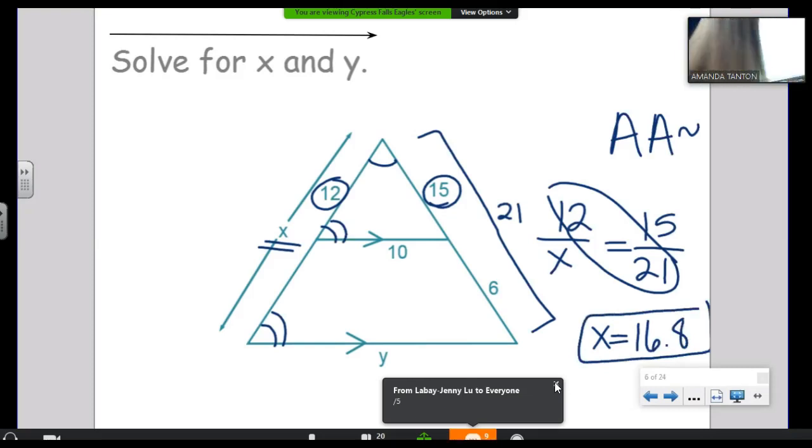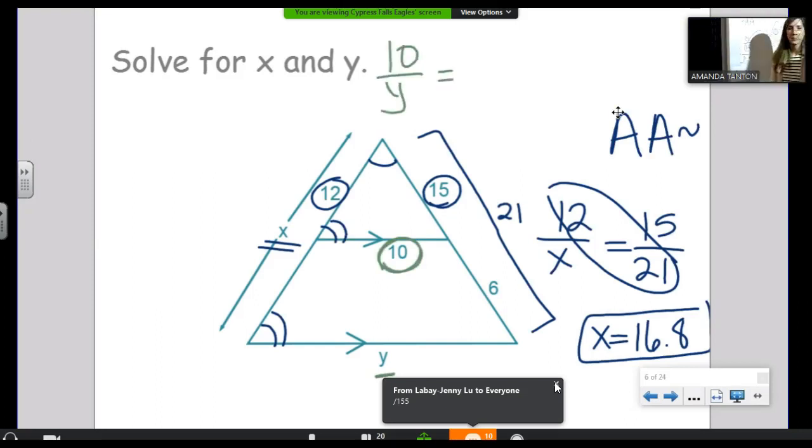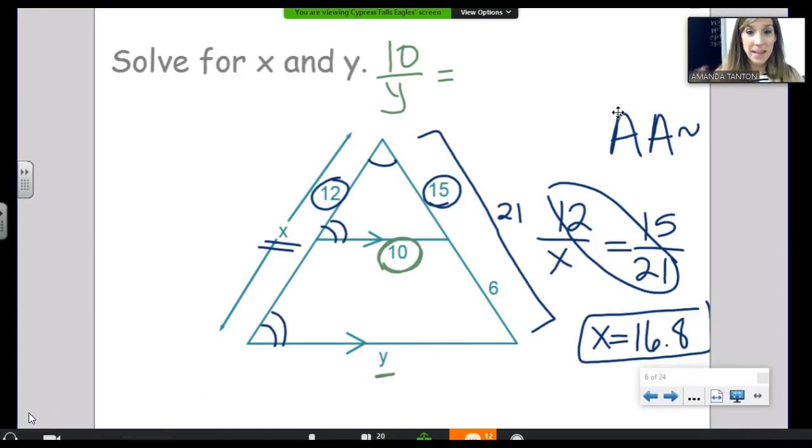Now let's find Y. All right. So we've got 10 is to Y as what do we write on the right? You can say it. Nobody?